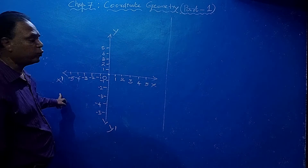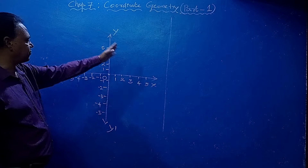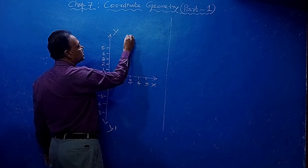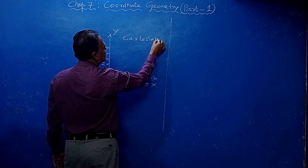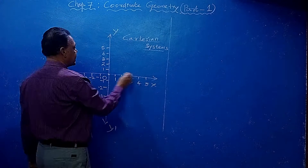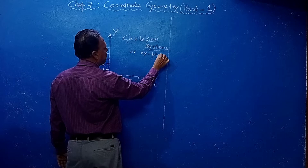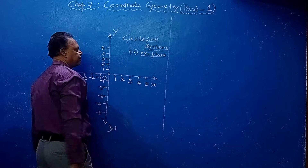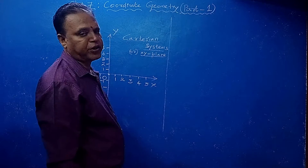Already you know that in the coordinate system, there is the Cartesian system - also called the x-y plane. Just recall: this is the Cartesian system, or we can say the x-y plane.